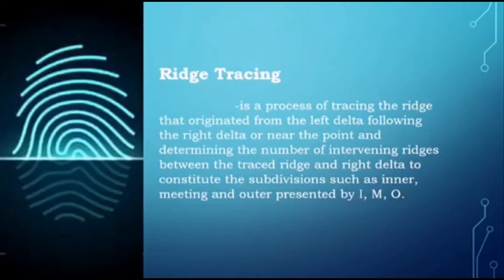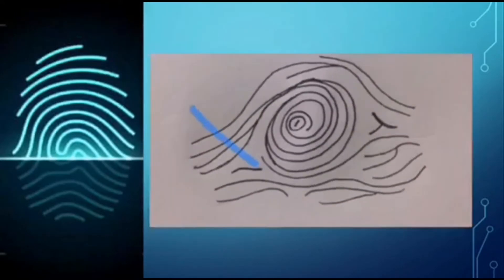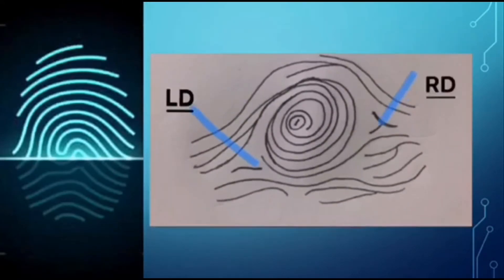There are important factors to consider in doing ridge tracing. First is determining the location of the deltas — we must first identify and look for the two deltas of the whorl pattern, just like the loop pattern. Upon determining the delta and the core, we draw an imaginary line between them and count the intervening ridges between the delta and the core.